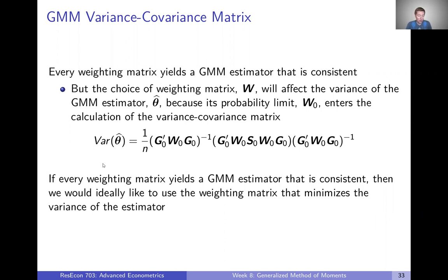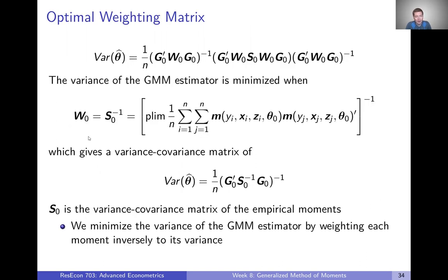Since every weighting matrix yields a consistent estimator, ideally we'd like to use the weighting matrix that minimizes this asymptotic variance and makes the GMM estimator as efficient as possible. It turns out the asymptotic variance of the GMM estimator is minimized when W₀, the probability limit of our weighting matrix, equals the inverse of S₀, where S₀ was defined in the last video.